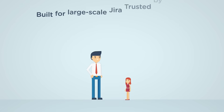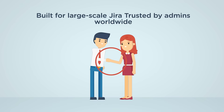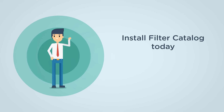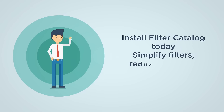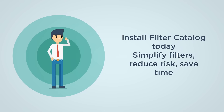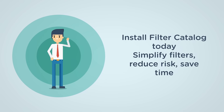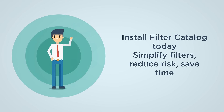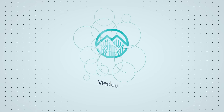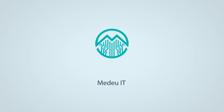Filter Catalog is designed for complex Jira environments, trusted by admins worldwide. Organize filters, eliminate guesswork, work smarter. Try Filter Catalog for Jira, available now on the Atlassian Marketplace.